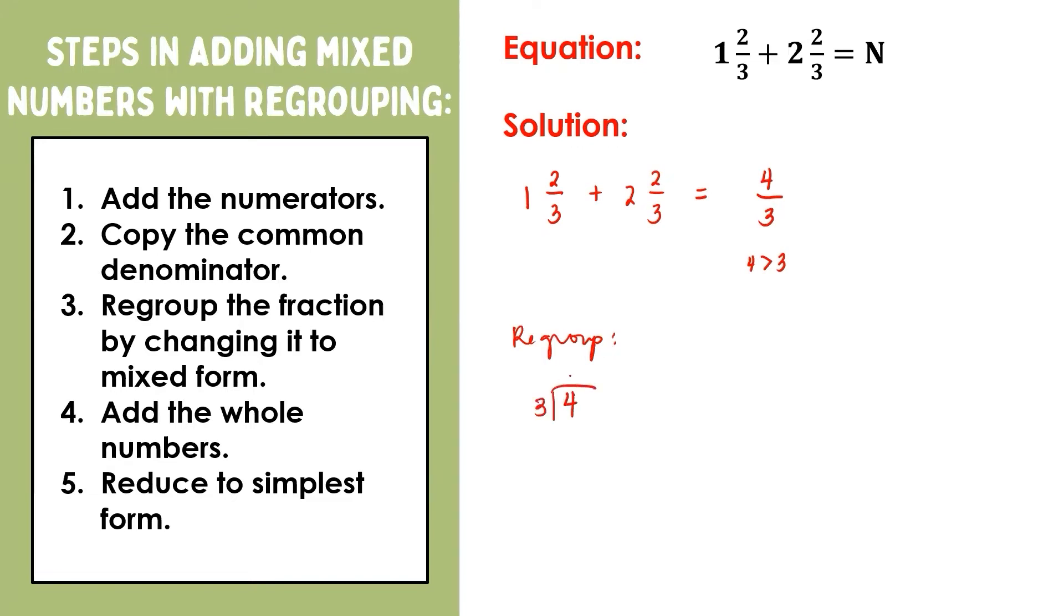Four divided by three is one, and one times three is three. That gives us a remainder of one. Now, let us rewrite four-thirds into one and one-third. We can now add the whole numbers. One plus two is three. Now, remember when we regrouped four-thirds, we got a one whole. So this whole should also be added to this whole. Thus, we have four and one-third, and this is already in its simplest form.